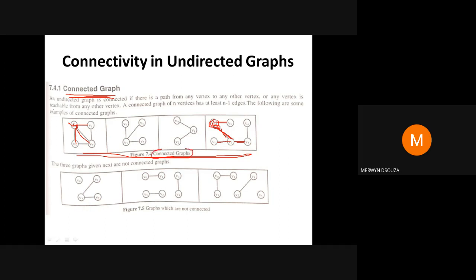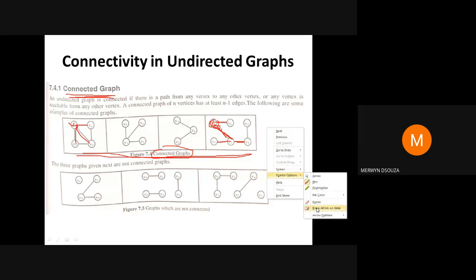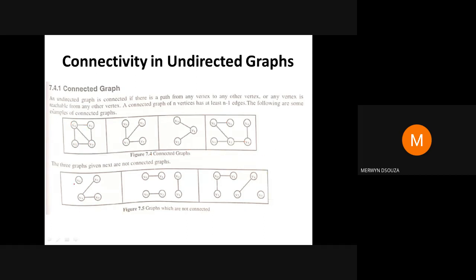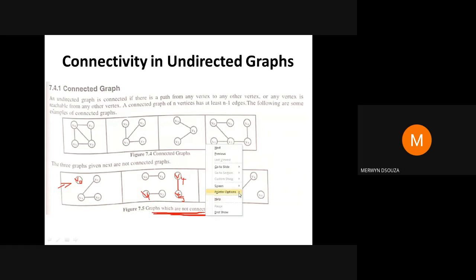These are all examples of connected graphs. Now consider a case where from v0 you are not able to reach other vertices — the moment you find even one such case, that is a disconnected graph. For example, from v5 you can only go to v4, but you cannot reach v2, v1, or other vertices. This is an example of a graph which is not connected.